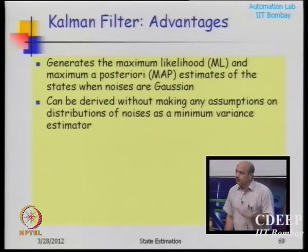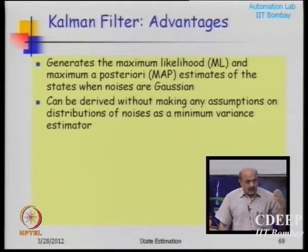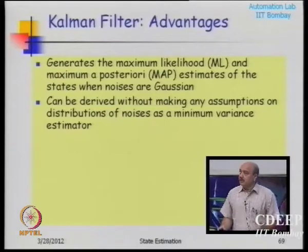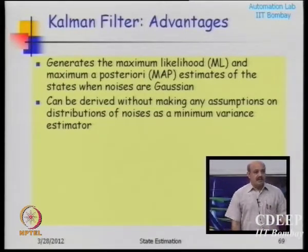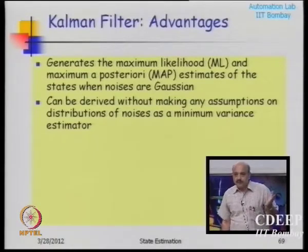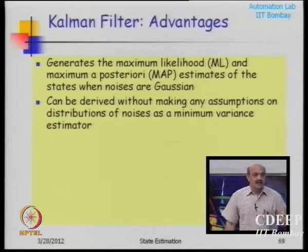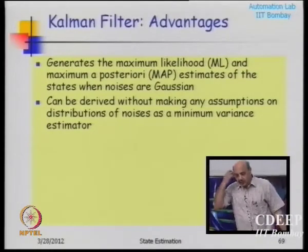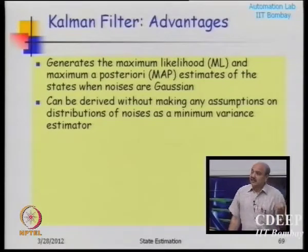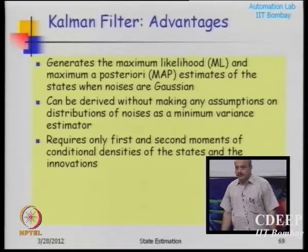If you start from just an optimization viewpoint — minimizing a scalar objective function, minimizing the trace of the covariance matrix — you get exactly the same estimate as you would get starting with a Gaussian assumption and looking at which estimate maximizes the likelihood function or the posterior density. All of them give the same result. This result is important because it is recursive and systematically takes into account uncertainty in the state dynamics and uncertainty in the measurement.